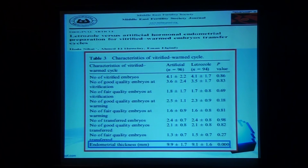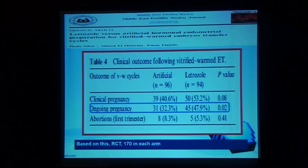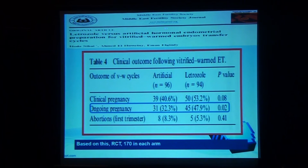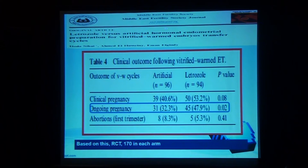This is another study by our group — a retrospective analysis of some of our data. Endometrium thickness was significantly higher in HRT than letrozole, but ongoing pregnancy rate was significantly higher in letrozole than artificial cycle. Based on this finding, we are currently running a randomized controlled trial including 170 patients in each arm, because with the RCT, we and other groups all over the world will reach a final conclusion.